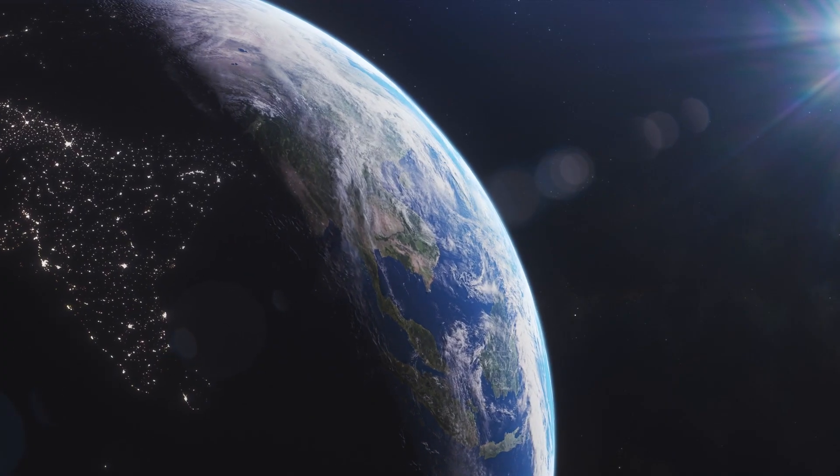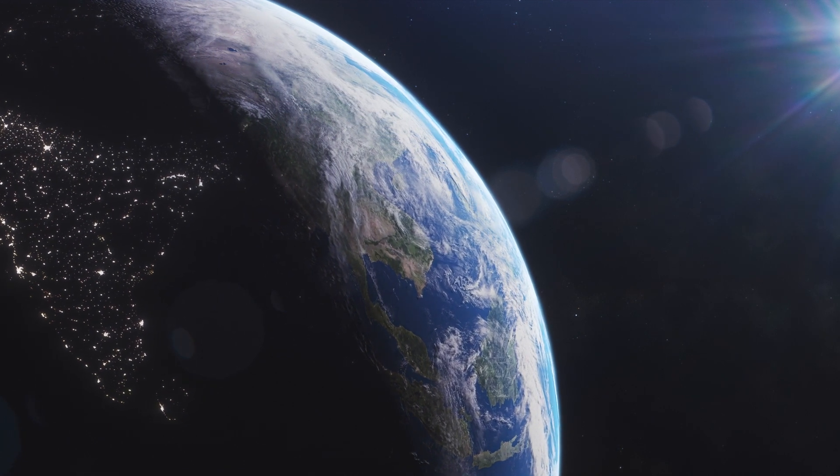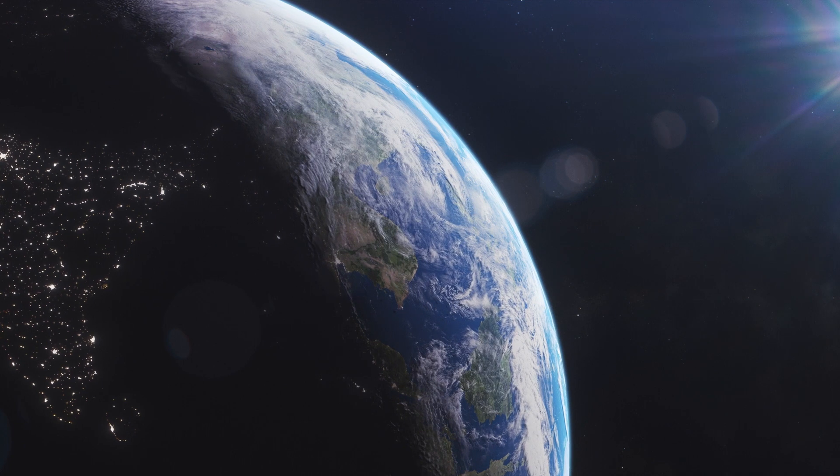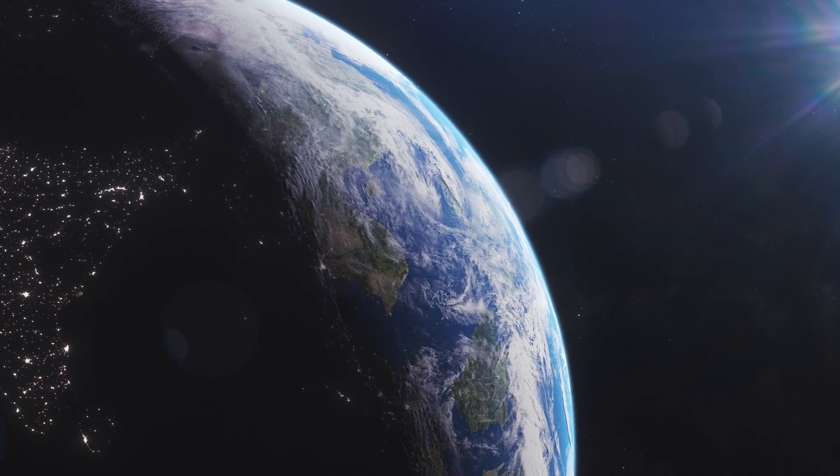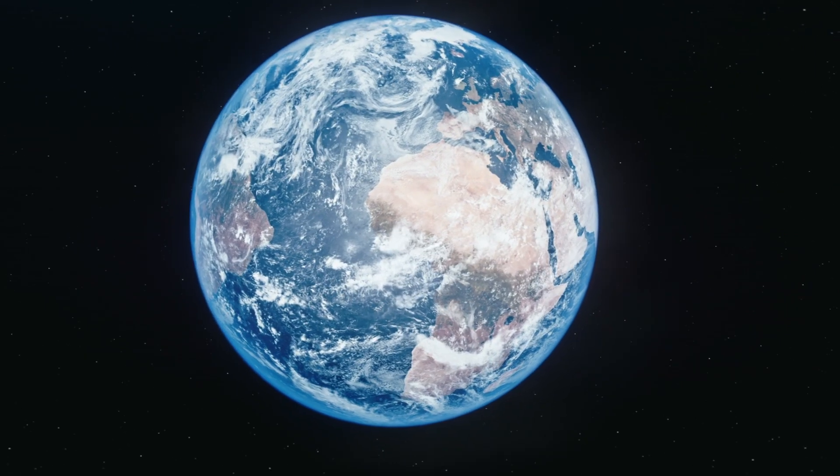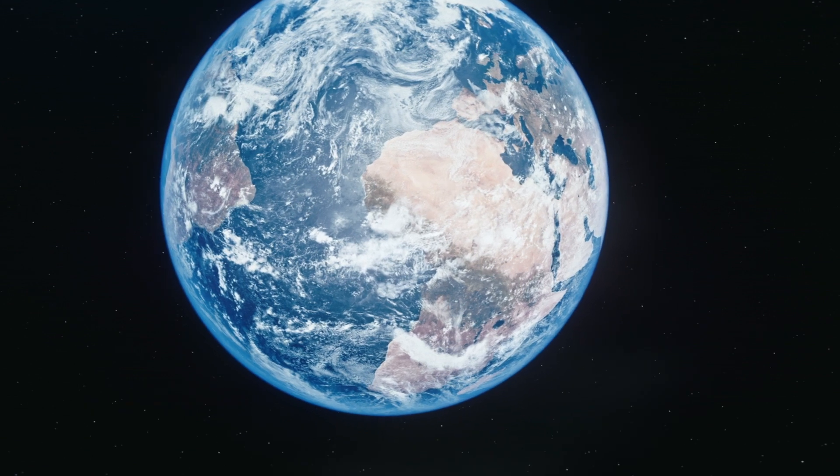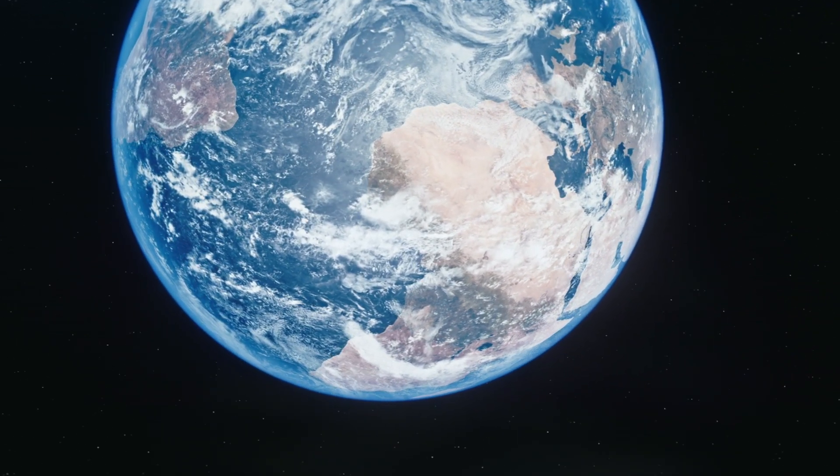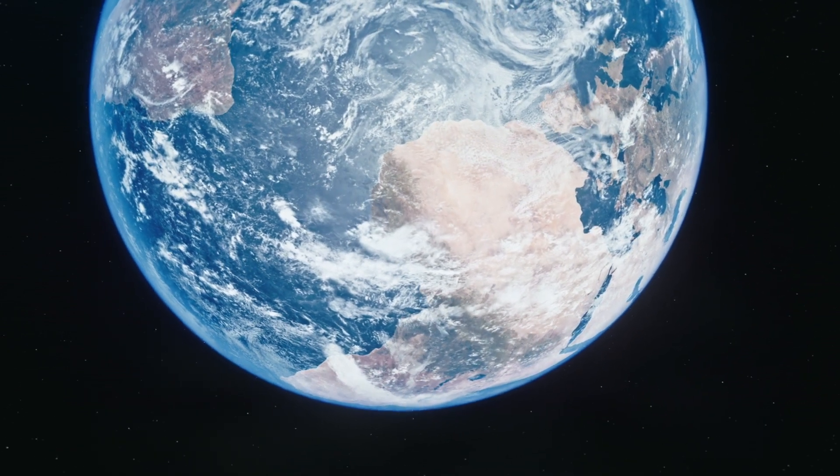Earth is the only planet in our solar system known to have life. It's like our cosmic home, and it's teeming with diverse creatures and ecosystems. Earth's shape is like a big blue marble with oceans and continents. It's not perfectly round, it's a bit squashed at the poles and bulging at the equator, like a spinning top.